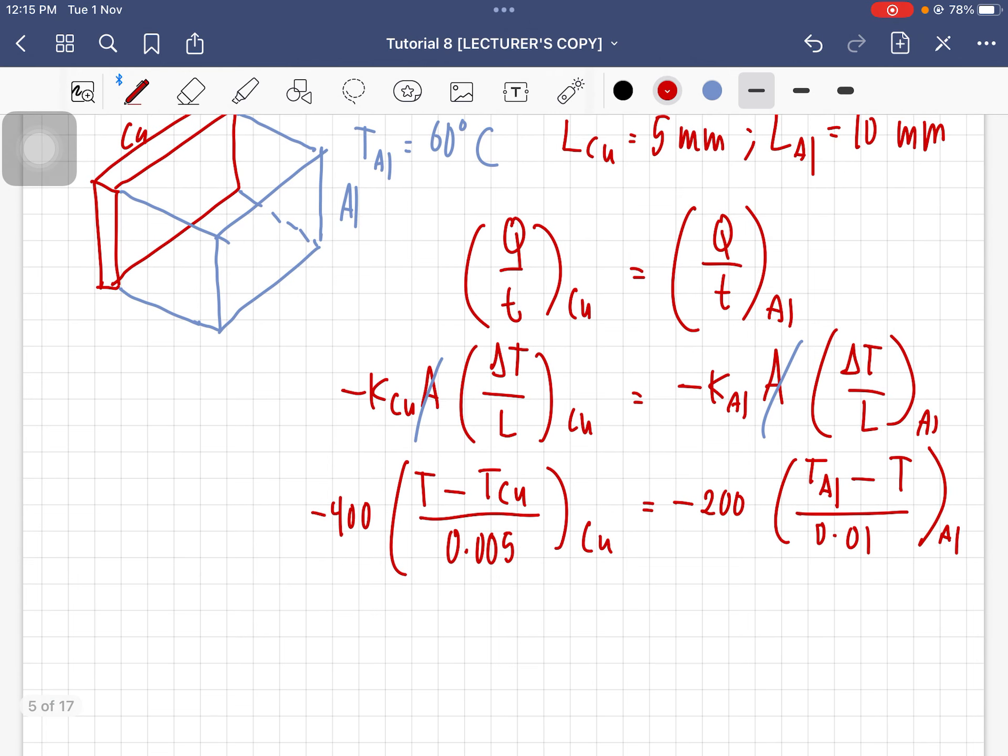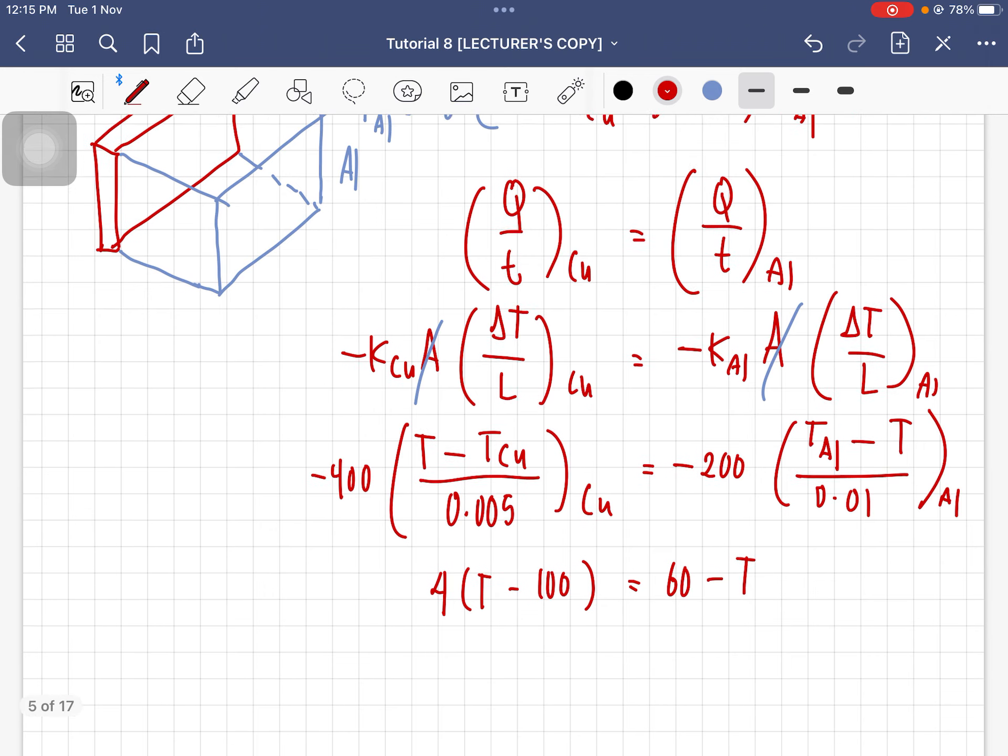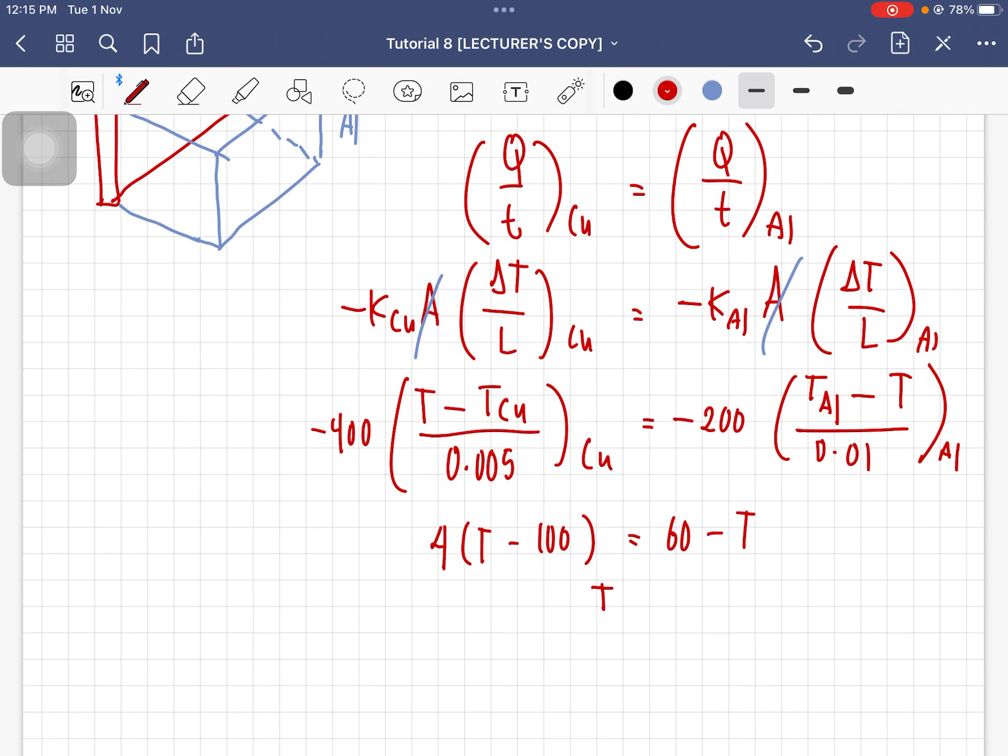Then you calculate it, you will get 4T minus 100 equal to 60 minus T. You should get T equal to 92 degrees Celsius.